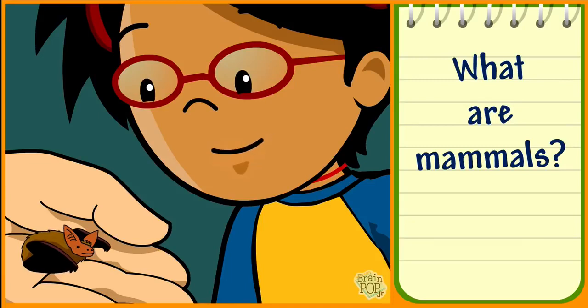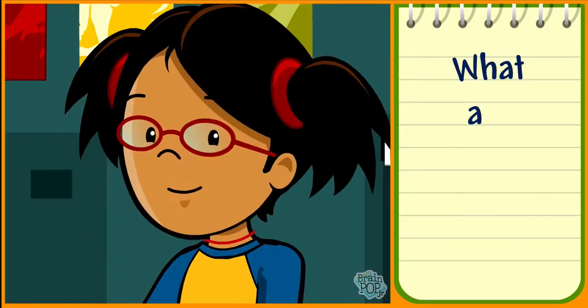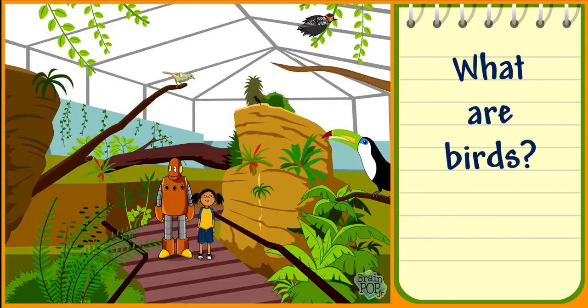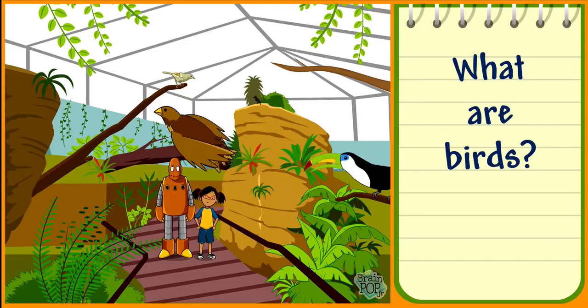Bats are the only mammals that fly like birds. But what are birds? Birds are vertebrates, and they're the only animals that have feathers.